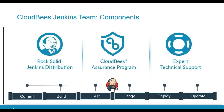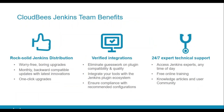The product is broken into three different pieces. We have the Rock Solid Jenkins distribution, which consists of both the plugins as well as the core. We have a CloudBees Assurance Program, which is a process for evaluating, testing, and hardening the Jenkins core as well as the corresponding plugins to make sure they work well together. And lastly, we have a support aspect — more than just having someone to call, but a set of valuable resources you can tap into at any time.